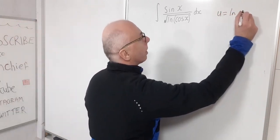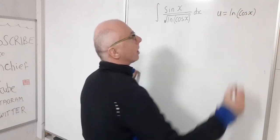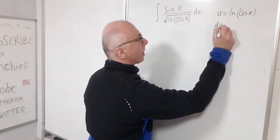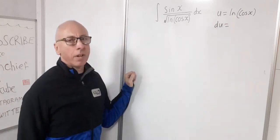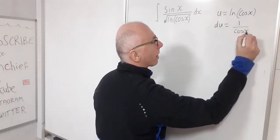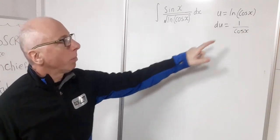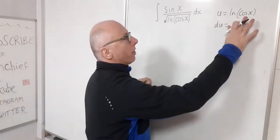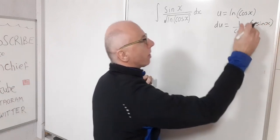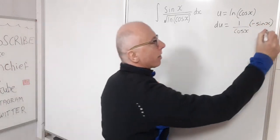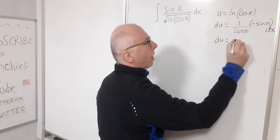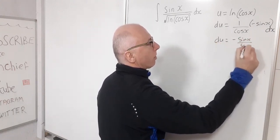So u equals the natural log of cosine of x. To perform the u-substitution, I take the derivative of both sides to get du. The derivative of ln(cos(x)): the derivative of a log is the reciprocal of its input, giving one over cosine of x, then by the chain rule we multiply by the derivative of cosine, which is negative sine of x. So du equals minus sine of x over cosine of x, dx.